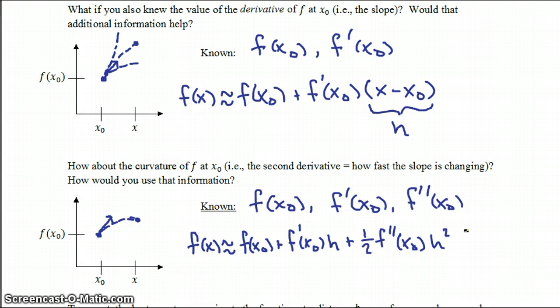This is a better estimate of f of x than the previous estimate. Of course, the further away you get from x0, in other words, the larger h is, the worse this estimate actually becomes of f of x. And the more derivatives that we keep adding to this equation, the better our estimate will be for larger h.